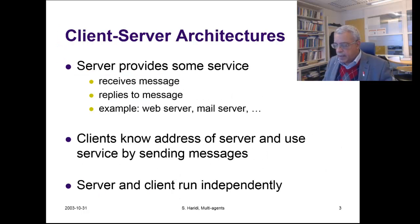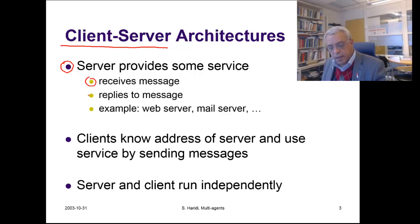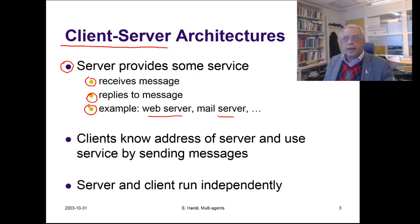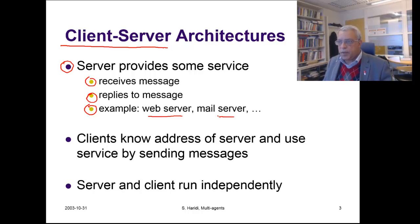There are two typical architectures for concurrent programs. One is called client-server architecture. In this architecture, a server provides some service — it receives messages, replies to messages, and accepts requests from clients and responds to those requests. Typical examples are a mail server or a web server. Clients know the address of the server and use the service by sending a message to that address. The address over the internet can be thought of as a URL, but a URL basically resolves to a real network address.